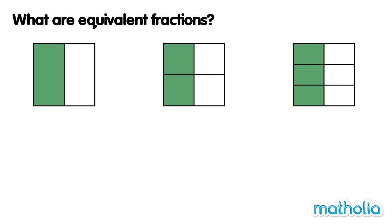In the first square, there are two equal parts. One part is coloured. One half of the square is coloured.